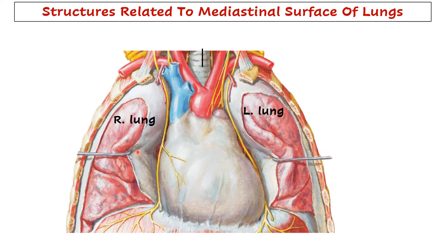Here we can see in this picture: this is the right lung, this is the left lung, and this structure covered with pericardium is the heart. So definitely some chambers of the heart on the right side and on the left side will come in relation to the lungs. First is heart chambers. Then we have two tubes - one is the trachea and behind that will be the esophagus - so they will also come in relation to the lungs.